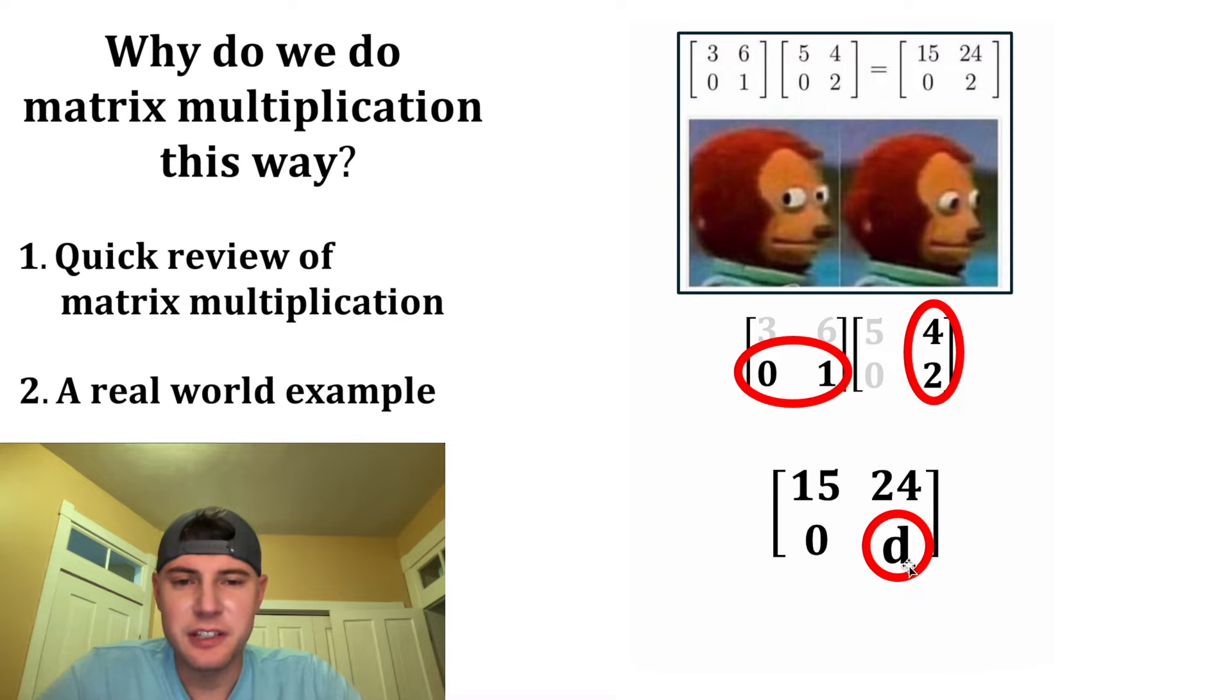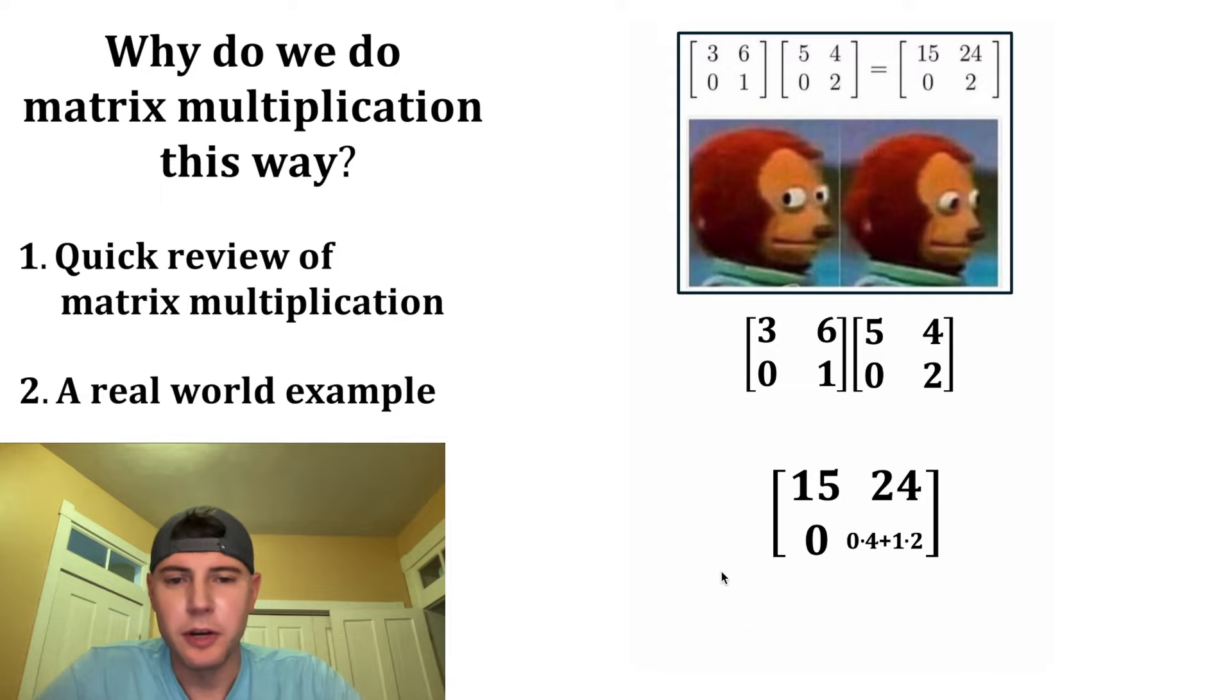And then for D, we're doing second row, second column, so we're going to do second row, second column. And it ends up being zero times four plus one times two, and all that is equal to two. So this is equal to this, and that's how you correctly do matrix multiplication.